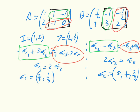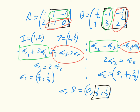Computing σ_r · B gives utilities (0, 1/3, 1/3). The two support strategies — columns 2 and 3 — both yield utility 1/3, and furthermore they are larger than the utility of the strategy outside the support. This confirms that this is indeed a Nash equilibrium.